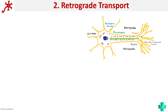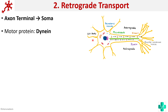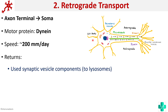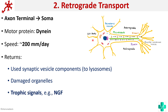Next is retrograde transport. The movement is from the axon terminal to the soma, and this is mainly via the motor protein dynein. The speed is around 200 millimeters per day. It returns used synaptic vesicle components to lysosomes, removes damaged organelles, and carries trophic signals such as nerve growth factor back to the soma.